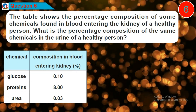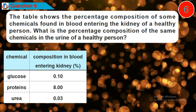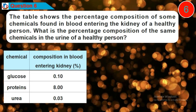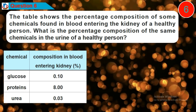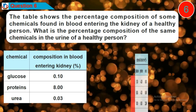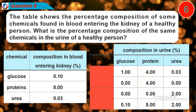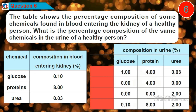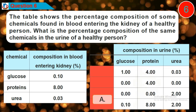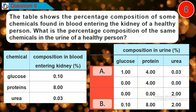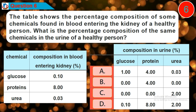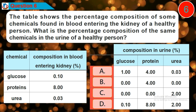Question 6: The table shows the percentage composition of some chemicals found in blood entering the kidney of a healthy person. What is the percentage composition of the same chemicals in the urine of a healthy person? Is it option A, B, C, or D?